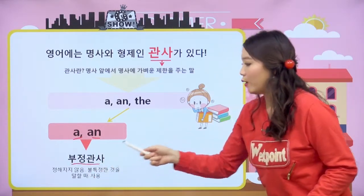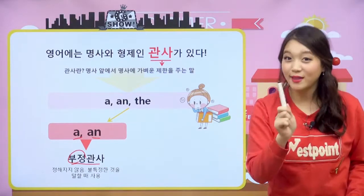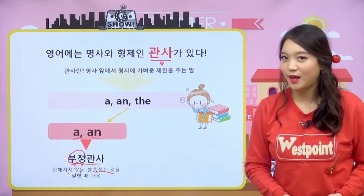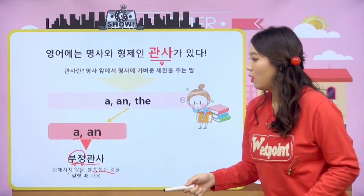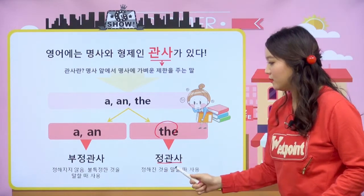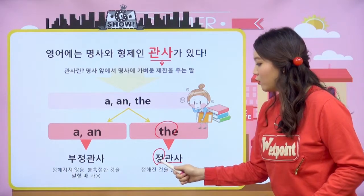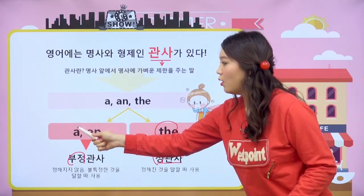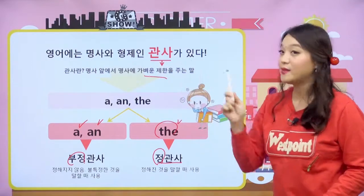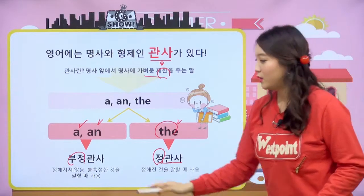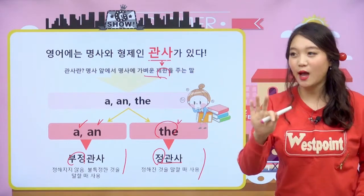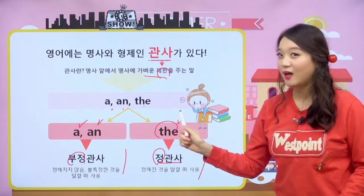a와 an은 부정관사라고 합니다. 여기서 말하는 부정은 부정하는 게 아니라 정해지지 않았다는 뜻이에요. 그래서 불특정한 것을 말할 때 사용을 합니다. 나머지 하나는 the예요. the는 정관사라고 하는데 정해졌다라는 거예요. 정해지지 않아서 부정관사(a, an), 정해져서 정관사(the). 관사는 세 가지: a, an, the이렇게 세 가지가 있다.